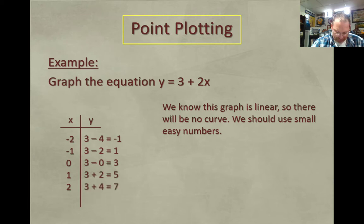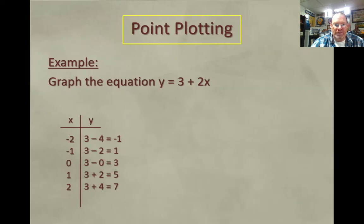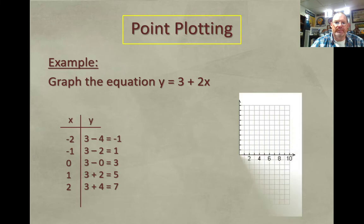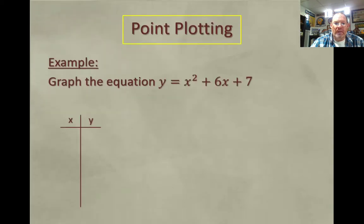So now we have a bunch of ordered pairs. We have negative 2, negative 1; negative 1, 1; 0, 3; 1, 5. And we're just going to plot those points on actual graph paper with the axes numbered. There we got some graph paper. There's our 5 points and a nice line going right through it. Piece of cake, right?